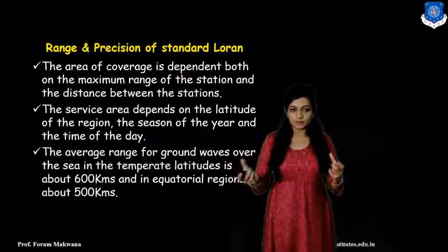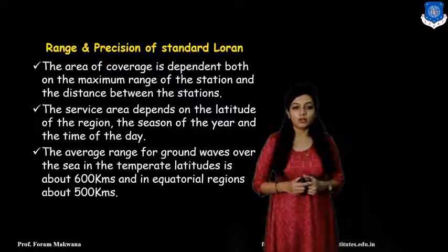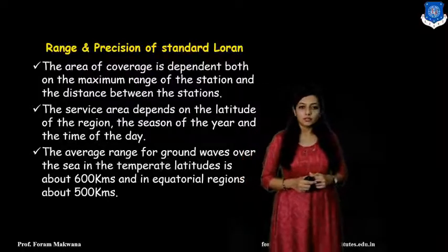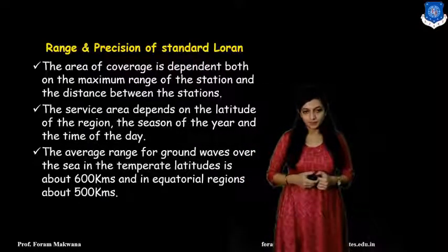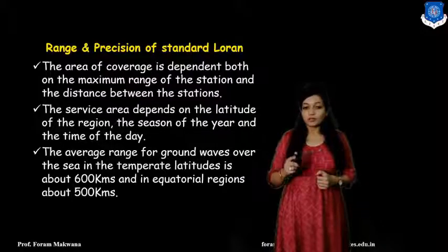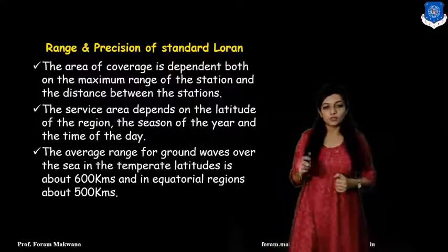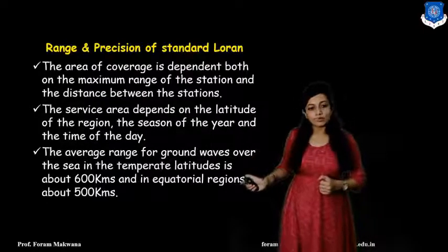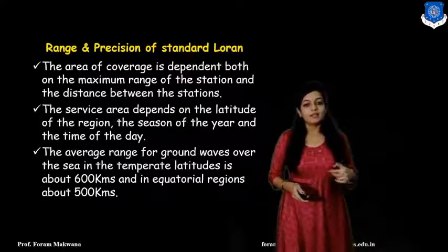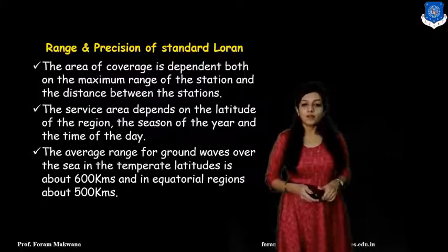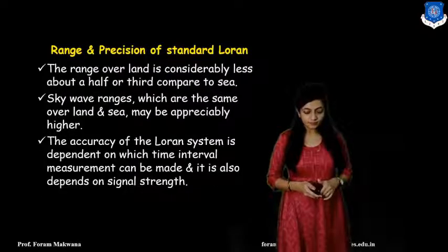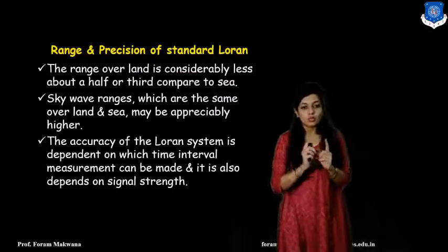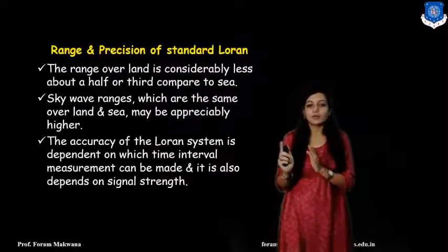This service area depends on the latitude of the region, season of the year, and time of the day. For the ground wave, the average range over the sea is around 600 kilometers, and in the equatorial region about 500 kilometers. The range over land is about half to one-third compared to sea.